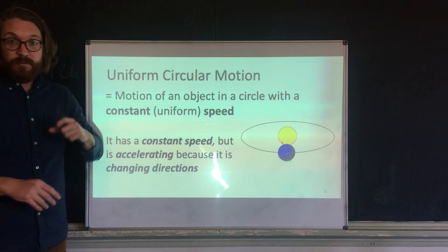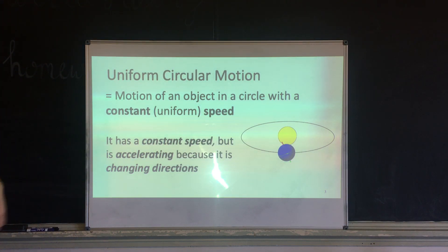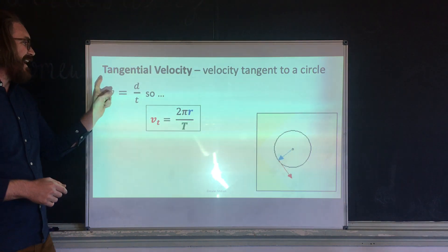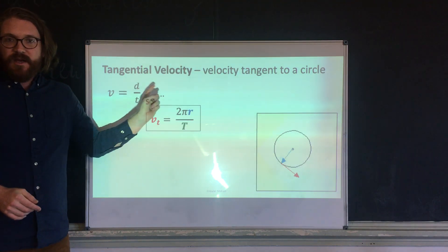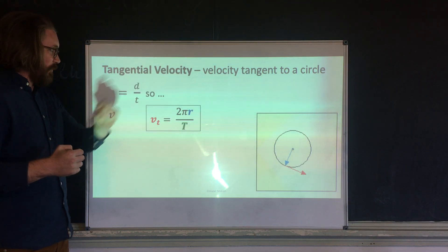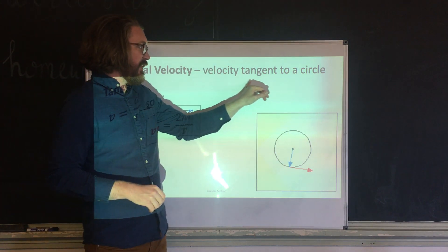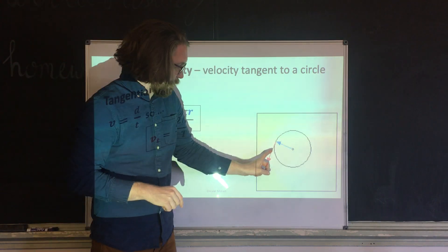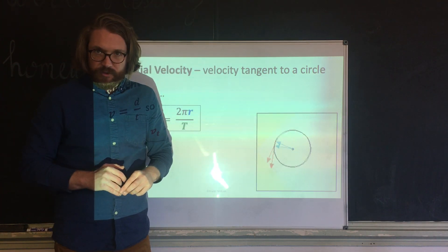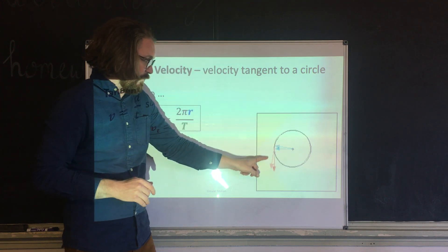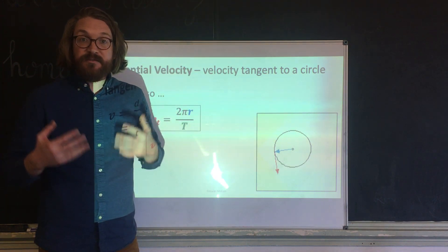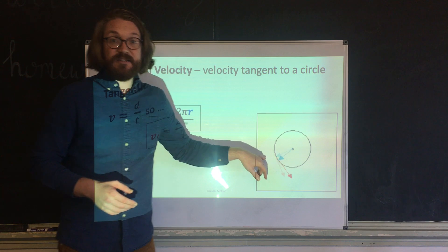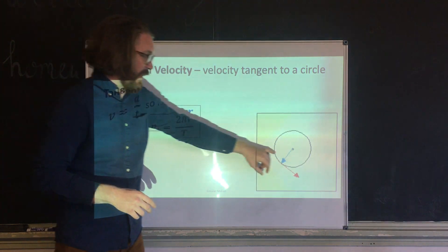The first thing we'll talk about is velocity — specifically tangential velocity. We call it tangential because the velocity is always tangent to the circle. In the diagram, the blue line is the radius and the red line is the velocity, which is always 90 degrees to the radius — always tangent to the circle.